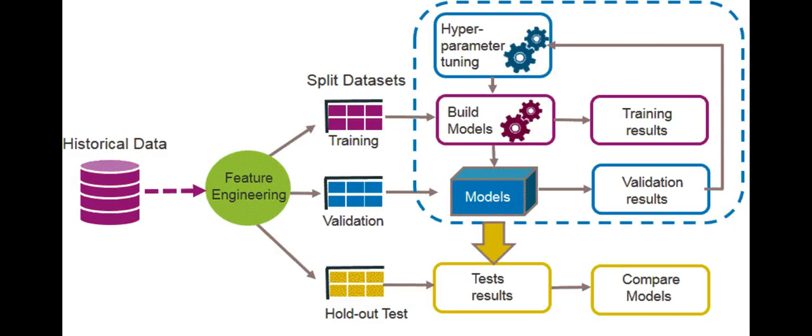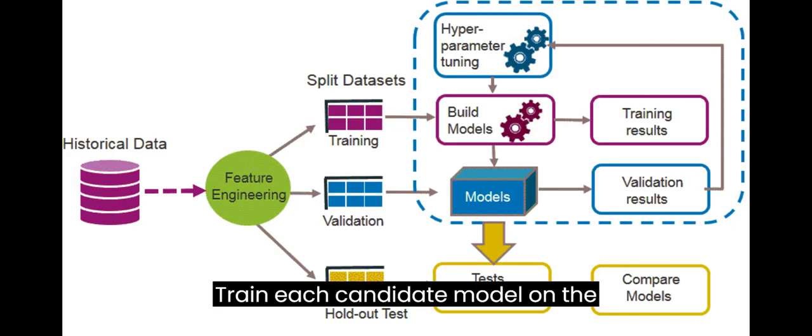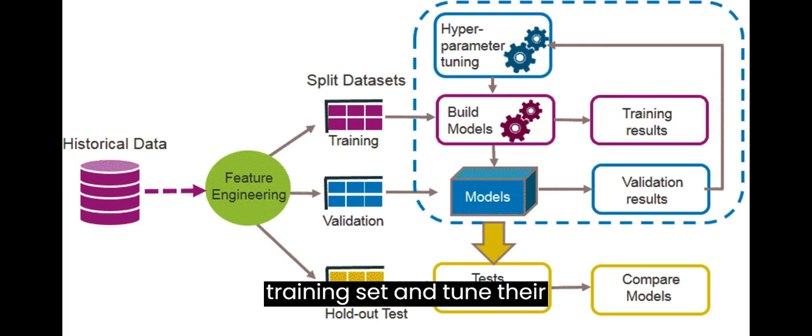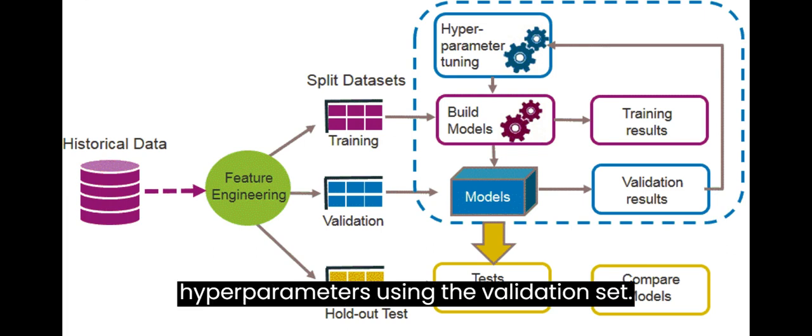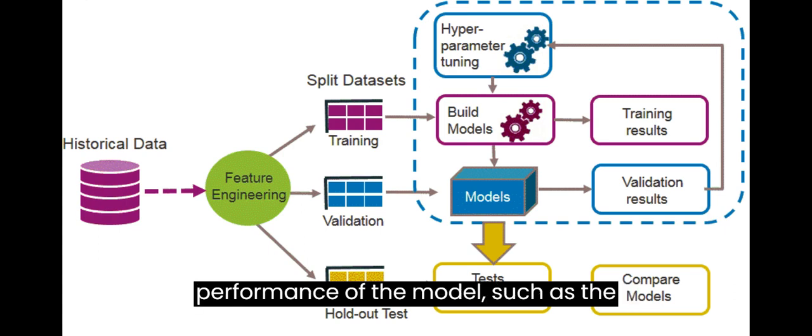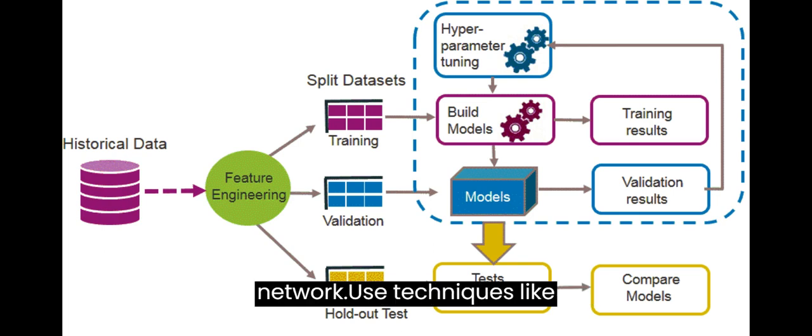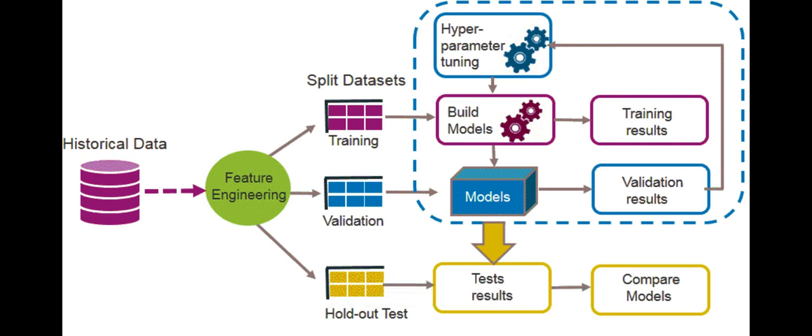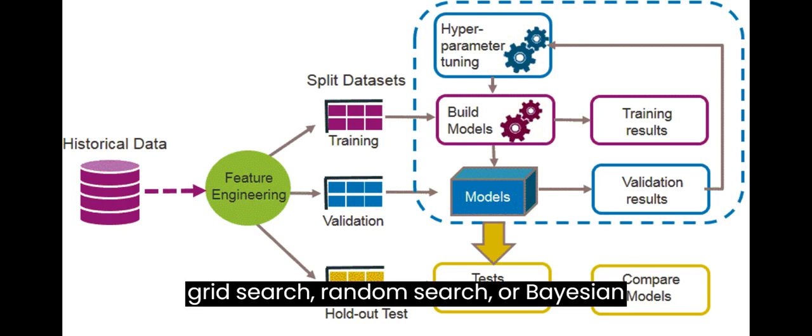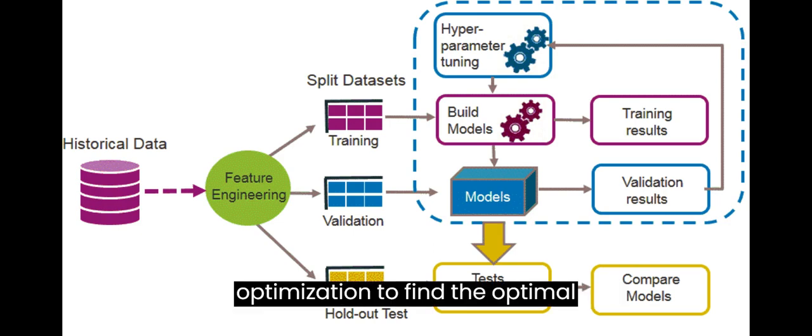Train and tune models. Train each candidate model on the training set and tune their hyperparameters using the validation set. Hyperparameters control the behavior and performance of the model, such as the learning rate, regularization strength, or the number of layers in a neural network. Use techniques like grid search, random search, or Bayesian optimization to find the optimal hyperparameters.